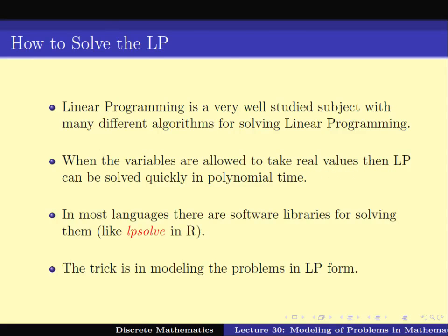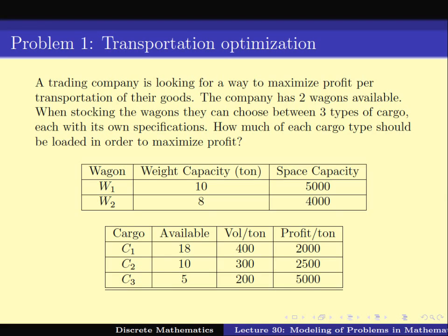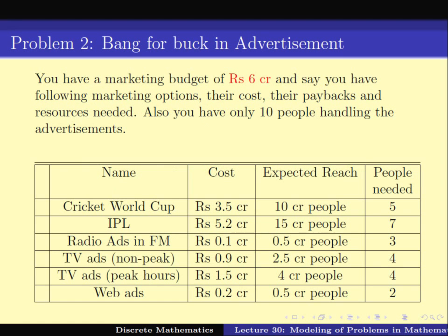In the last video we saw how to use LP to formulate problem 1. In this video let's look at problem 2. You have 6 crore in hand and 10 people, and you have to invest in various advertisement options. Each advertisement option has a cost associated with it, the number of people required, and an expected number of people reached. Your goal is to reach as many people as you can under the condition that you don't spend more than 6 crore and don't need more than 10 people.